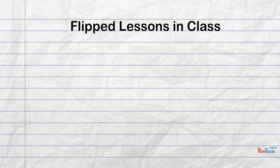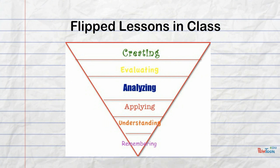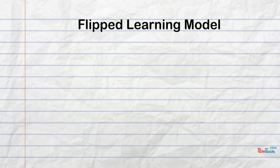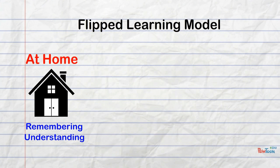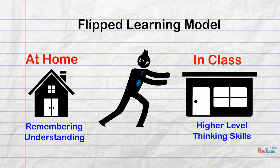Rather than focusing class time on all of the remembering and understanding, the class time is focused on applying, analyzing, evaluating, and creating new information. So in the flipped learning model, at home that's where the remembering and understanding lesson is delivered. And in class, that's where the focus is on the higher-level thinking skills in Bloom's taxonomy.